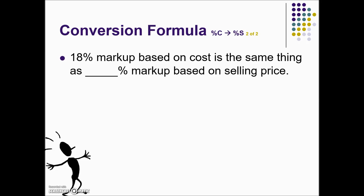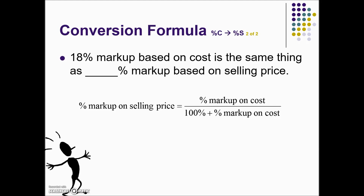We have another example: given 18% markup based on cost, we're asked to find an equivalent percent markup based on selling price. Using the formula for converting a markup percent on cost to a markup percent on selling price, we replace the percent markup on cost given as 18%, simplify the denominator, and convert our percents into decimals at the same time. We then take the numerator 0.18 divided by 1.18, giving us the following decimal, and last we convert this decimal into a percent to answer the question.